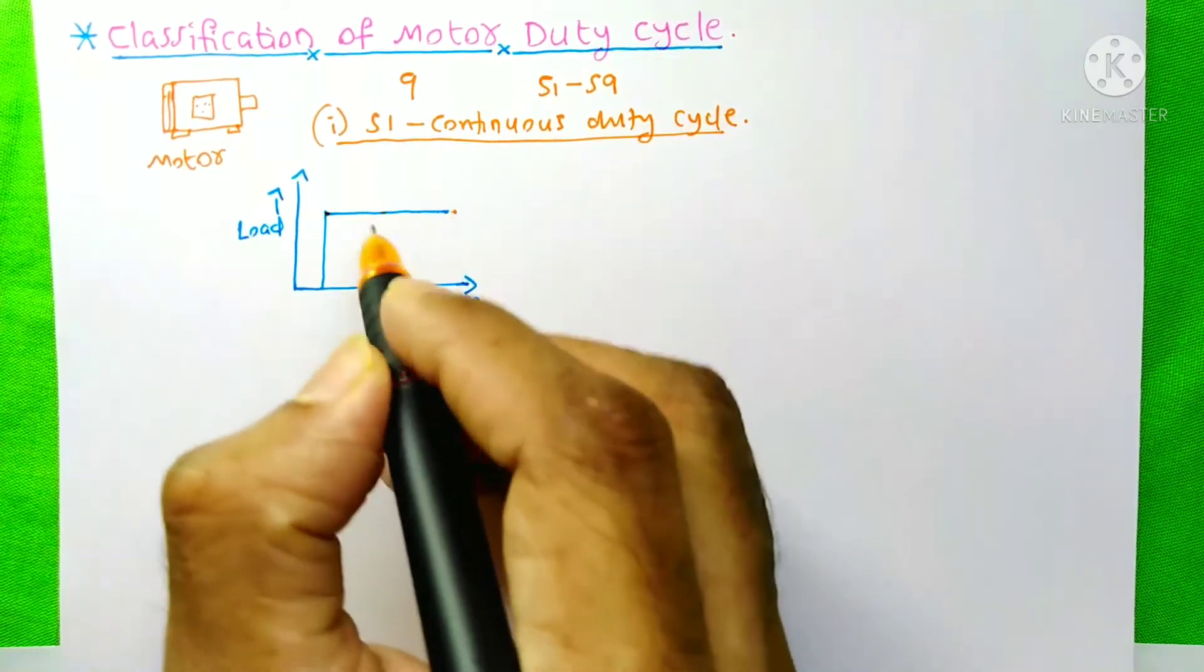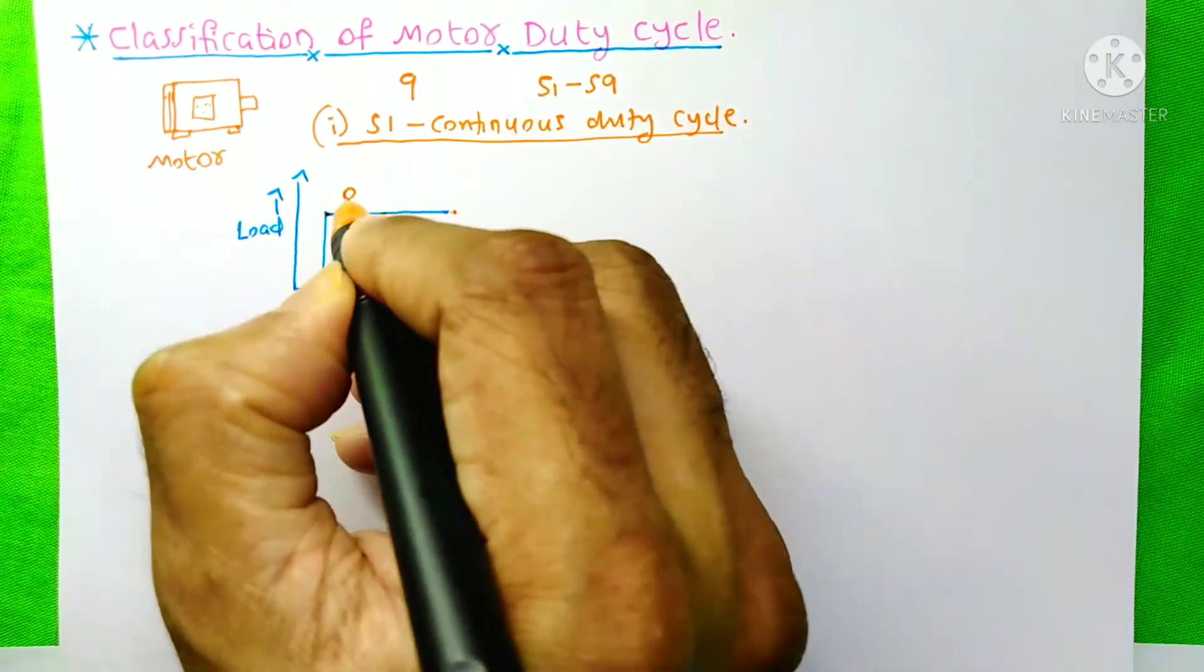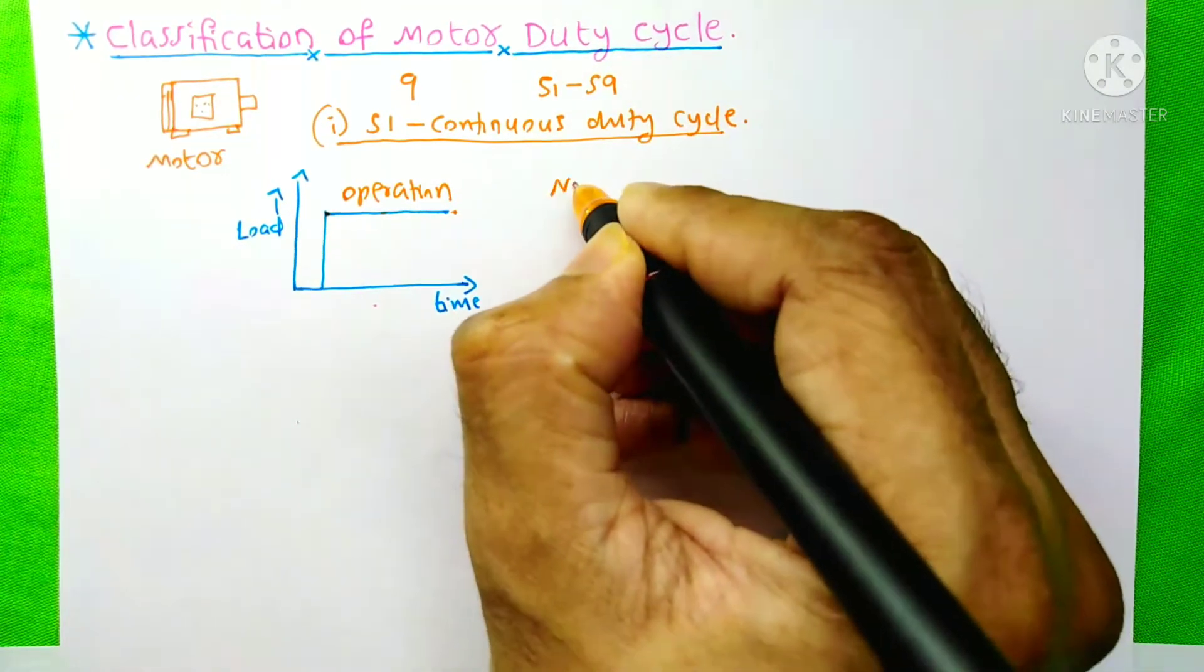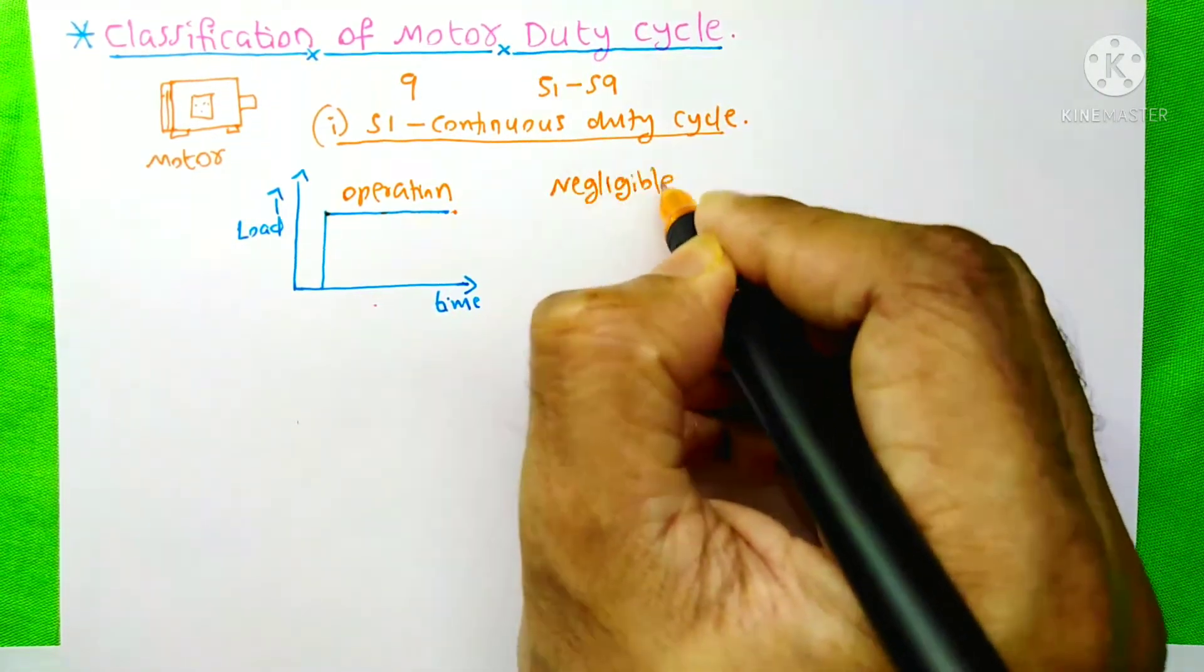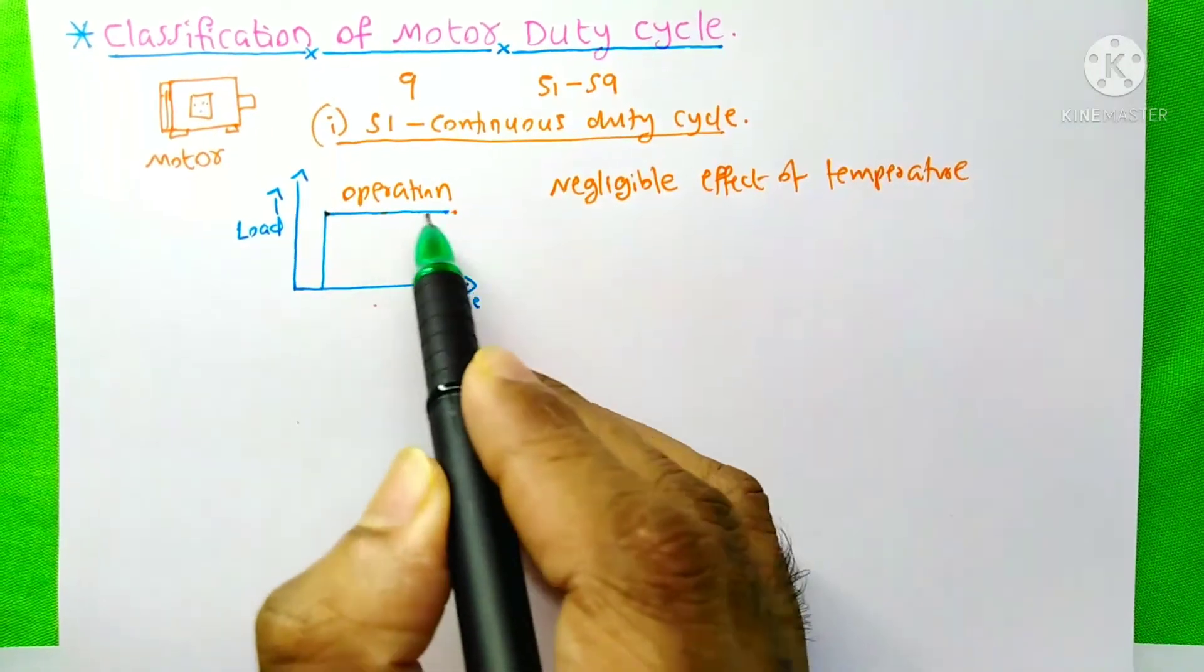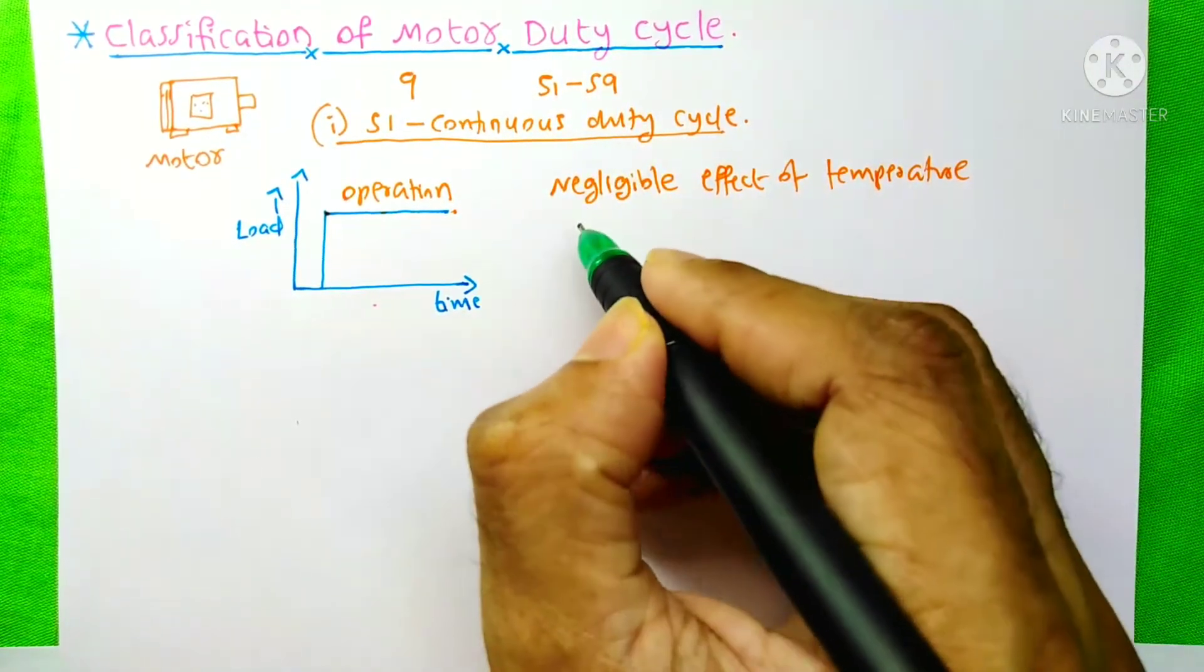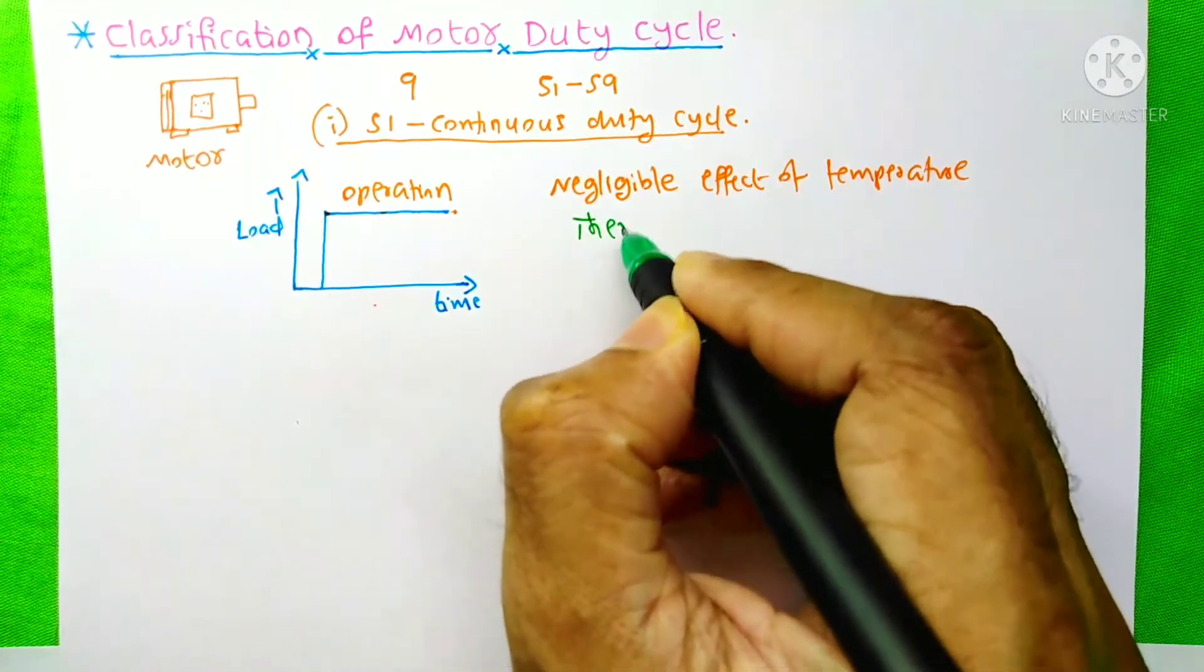This line indicates the operation of this motor. In this duty cycle, there is negligible effect of temperature on motor starting. And during the operation of this motor, the motor's temperature will reach thermal equilibrium state.